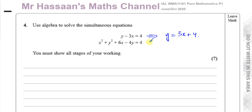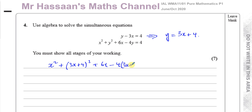Taking equation 2, which is x squared plus y squared, I replace y with 3x plus 4, giving x squared plus (3x plus 4) squared, plus 6x minus 4 times (3x plus 4), equals 4. I've substituted y equals 3x plus 4 from the first equation into the second equation, and now I have an equation with just x's, which I can solve.